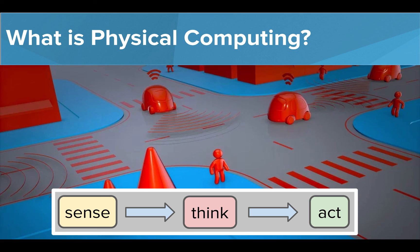A self-driving car is a great example of a device using these physical computing steps. Though this is a complicated system with many inputs and complex programs, the main parts of a self-driving car work the same as any system we'll build in this course. The car uses multiple sensors to detect its surroundings, analyzes what this data means, and then acts accordingly.